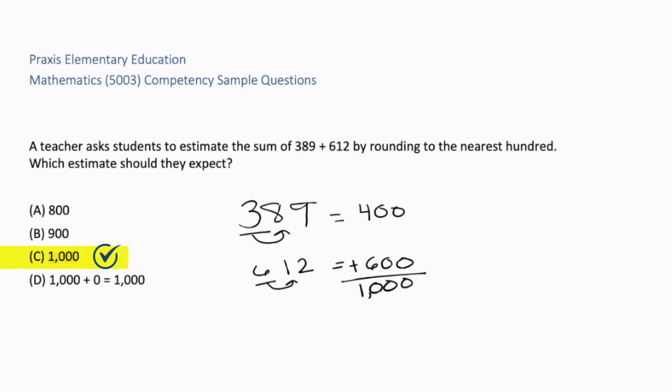If we look at A, 800, this shows that students may round down incorrectly. B, 900, students might round one number up and the other down. And D, this is a misinterpretation of place value notation.